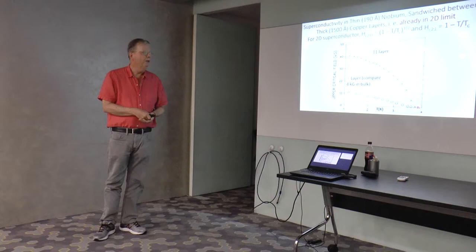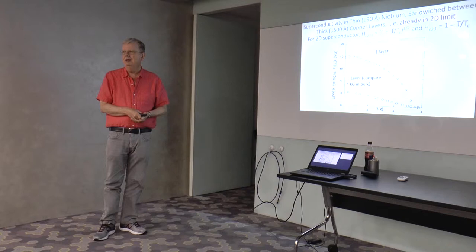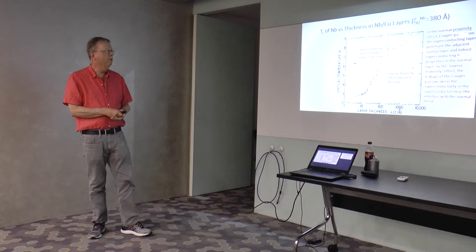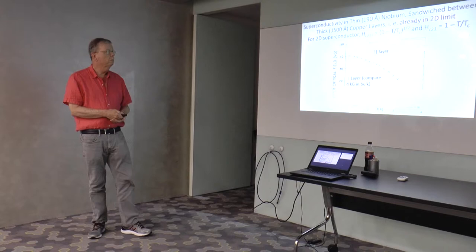For those paying close attention, you'll notice TC is not 9.2 Kelvin. This is a much lowered TC. It was around 190 angstroms on the earlier graph, so it would have been about 6.5 from that graph, but from the data we're looking at it's more like 4. So disorder is playing a role in the superconductivity.